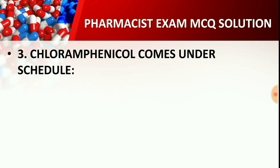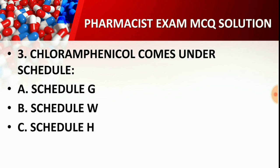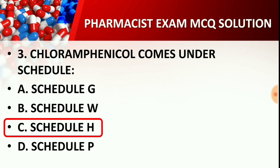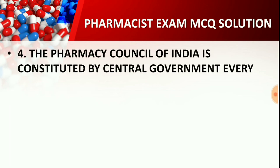Question number 3: Chloramphenicol comes under which schedule? Option A: Schedule G, Option B: Schedule W, Option C: Schedule H, Option D: Schedule P. The correct answer is Option C — Schedule H. Chloramphenicol is a Schedule H drug, meaning a doctor's prescription is required for its purchase and sale; it can only be obtained under medical supervision.